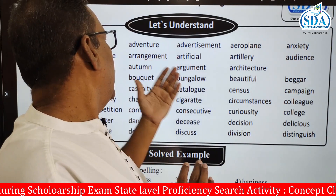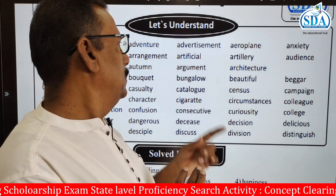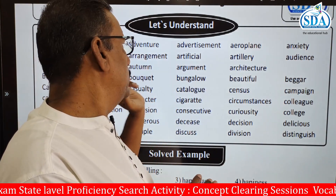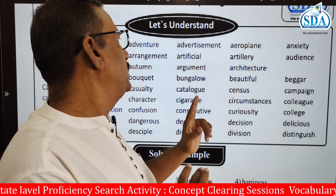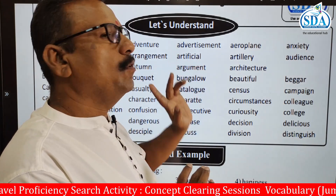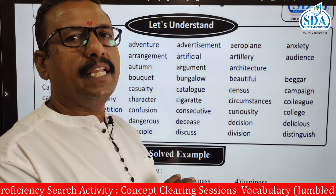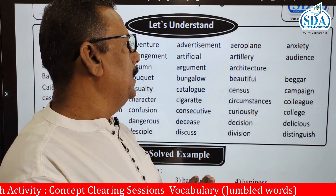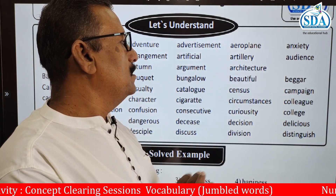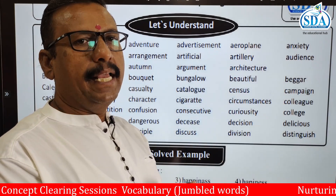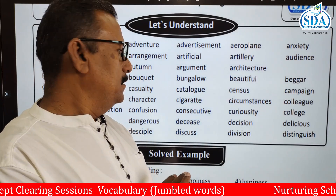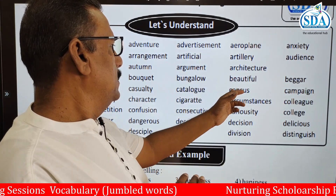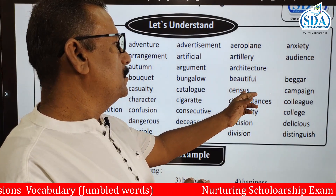Then arrangement — G is there. Artificial — there is no S-H in artificial. Artillery, audience — just like that. See here, census — it still has its spelling.